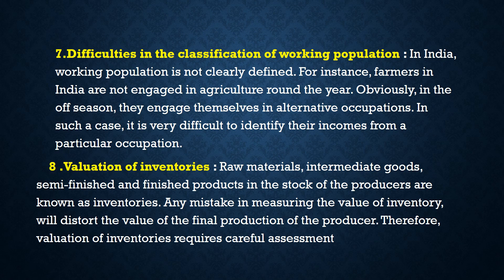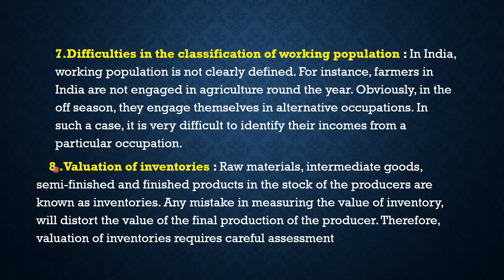Number 7: difficulties in the classification of working population. In India, the working population is not clearly defined. For instance, farmers in India are not engaged in agriculture round the year — in the off-season, they engage themselves in alternative occupations. In such cases, it is difficult to identify their income from a particular occupation, making it difficult to measure the national income.